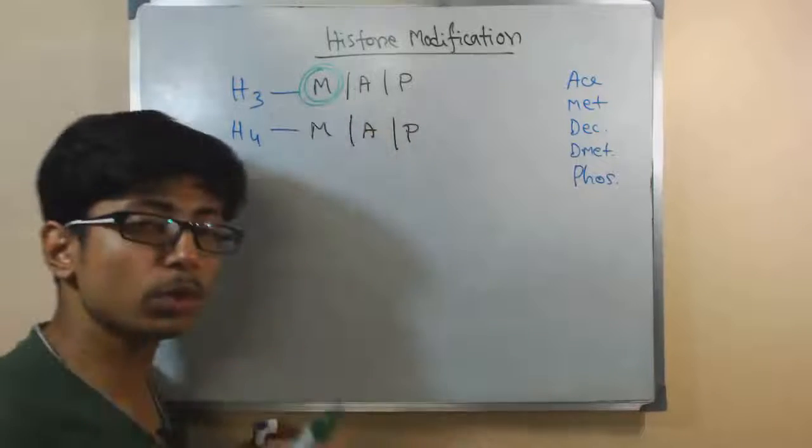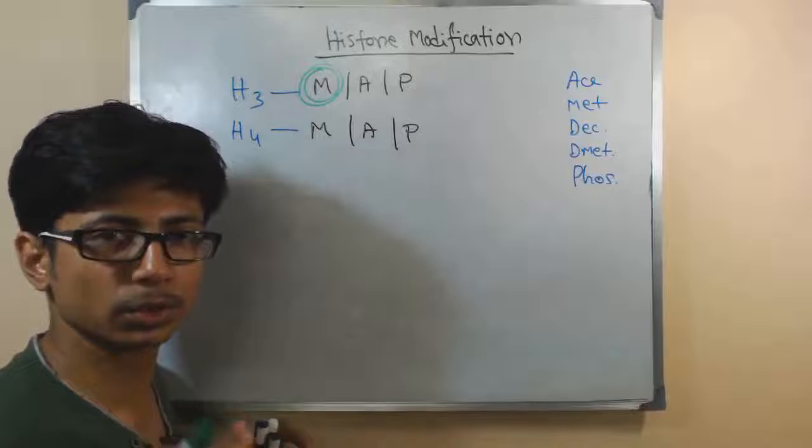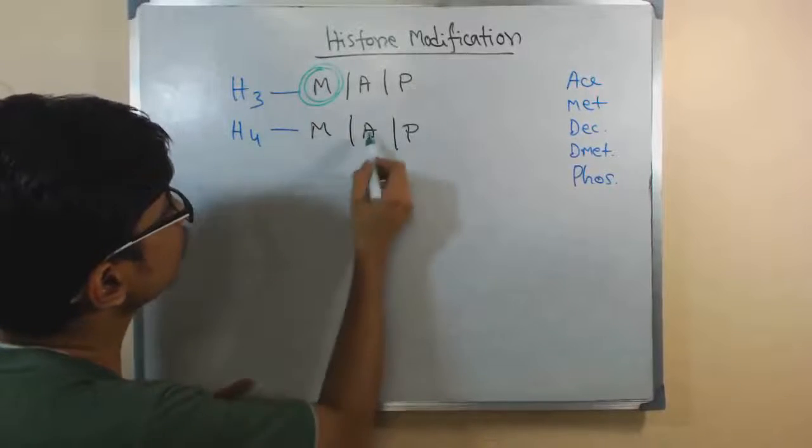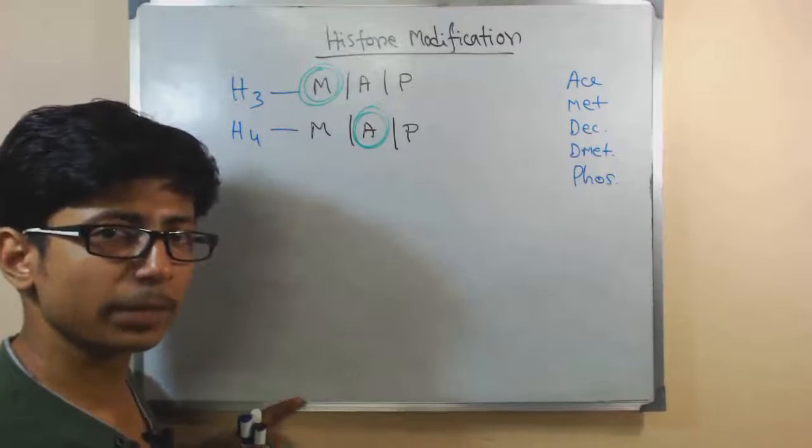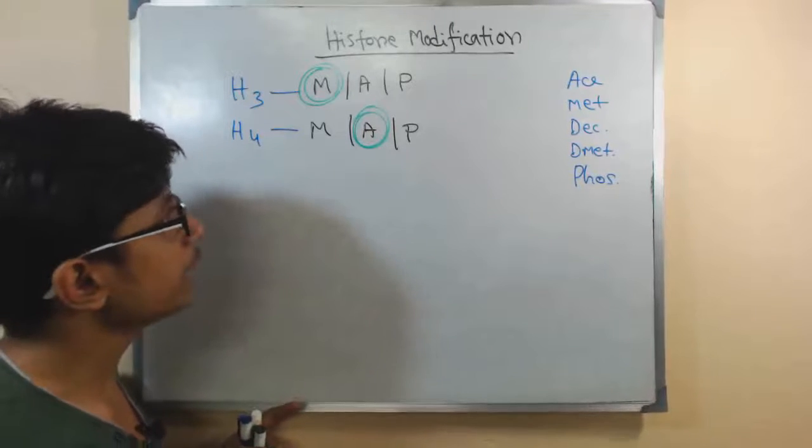In histone 3, methylation is very much common. Methylation is the most abundant thing that happens to histone 3. On the other hand, in histone 4, acetylation is the most common kind of modification that we see in H4.